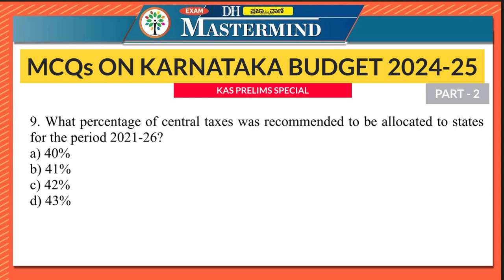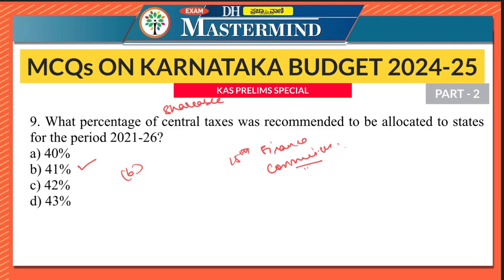What percentage of central taxes was recommended to be allocated to states for the period 2021-2026? Options are 40%, 41%, 42%, or 43%. This question is about the 15th Finance Commission's recommendation. As per accepted recommendations of the 15th Finance Commission, the states' share has been fixed at 41% of the net proceeds of the shareable central taxes. In the 14th Finance Commission it was 42%, reduced by 1% in the 15th.